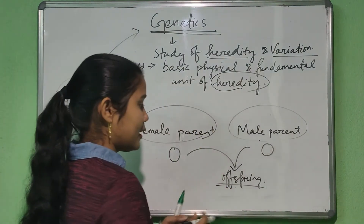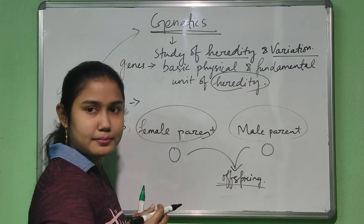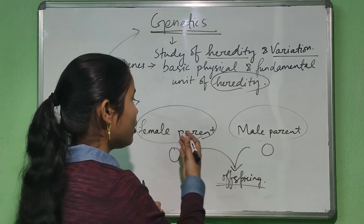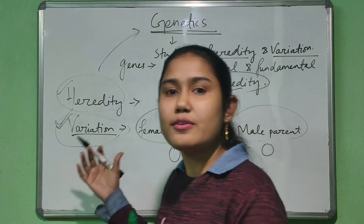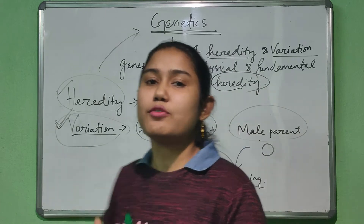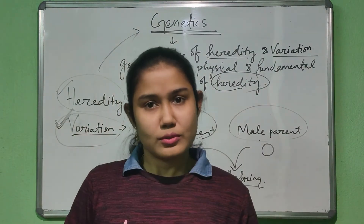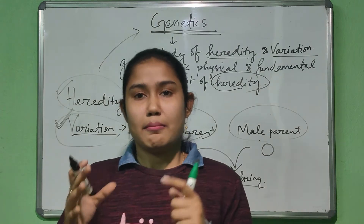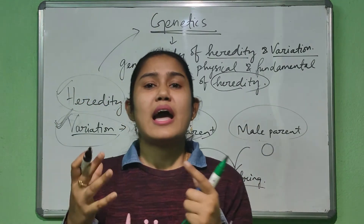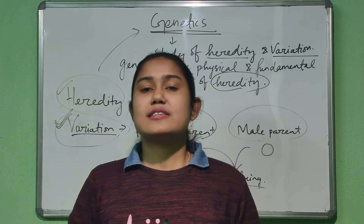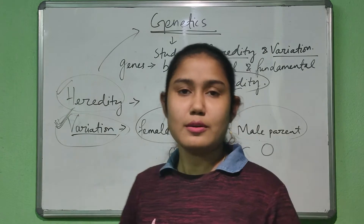This offspring may or may not resemble the parent. In some characteristics it will differ from its parent or it will differ from its siblings, and that is the variation. Besides the fusion of gametes, some environmental factors are also there which influence the variation process.